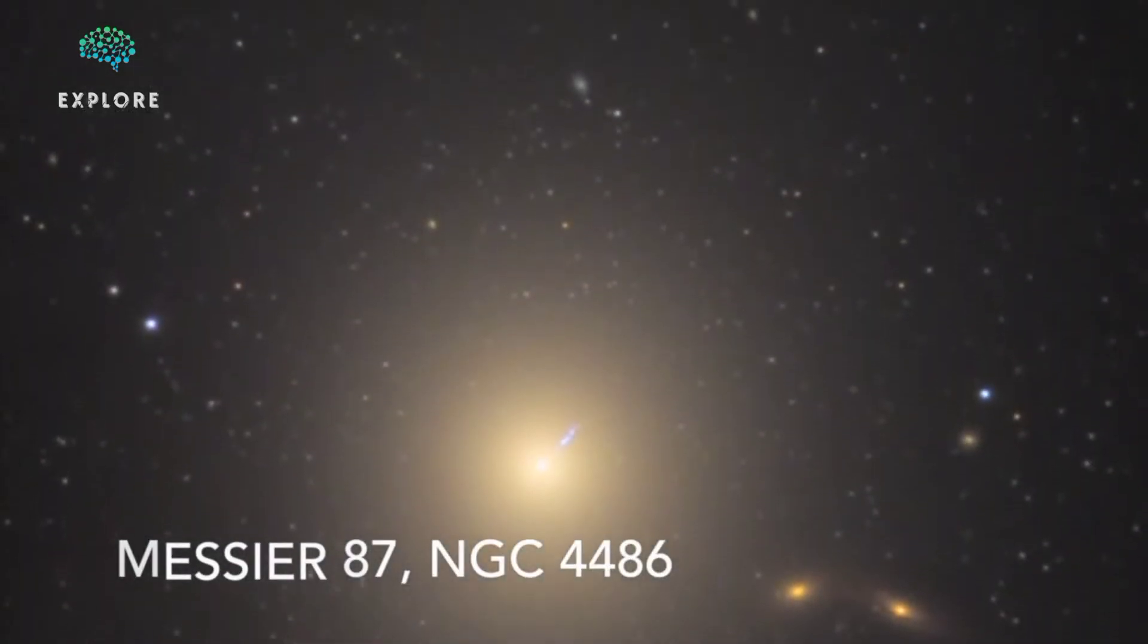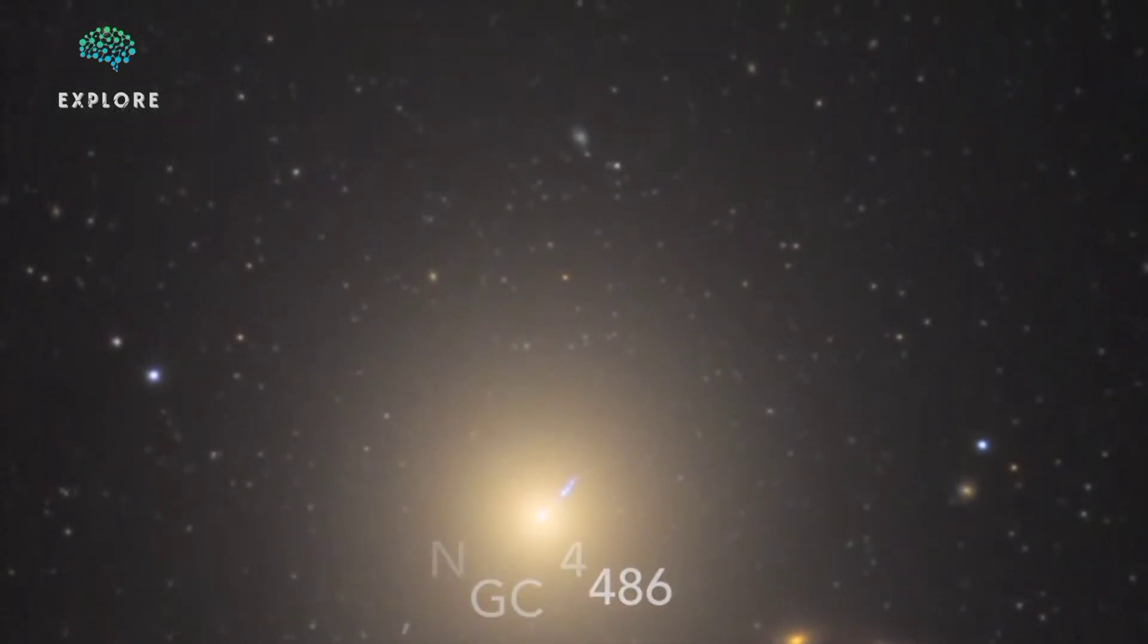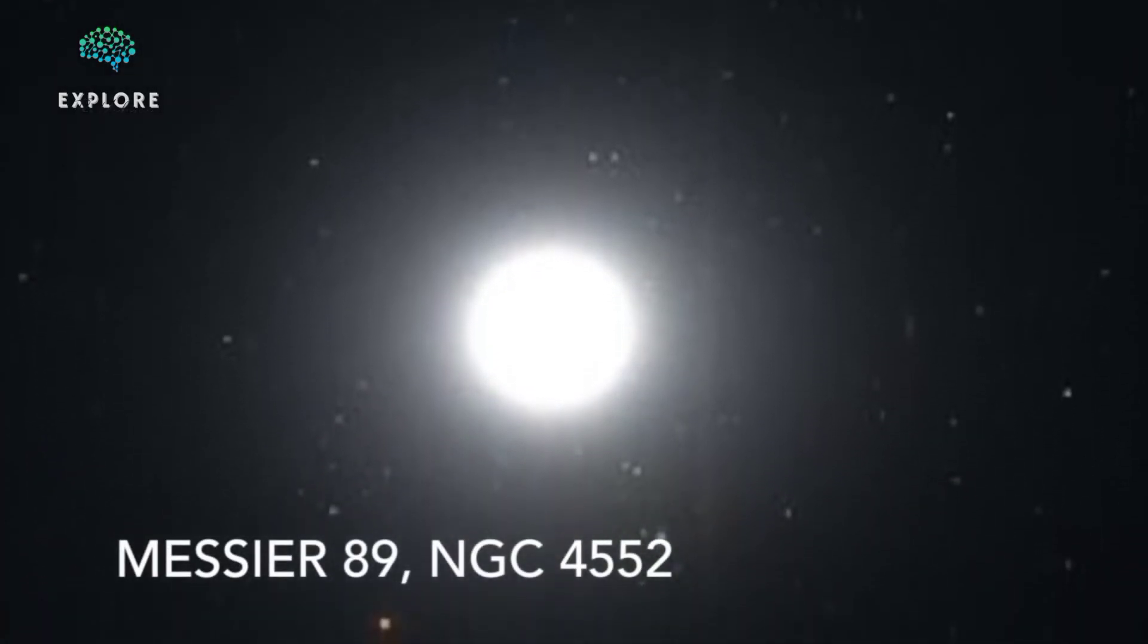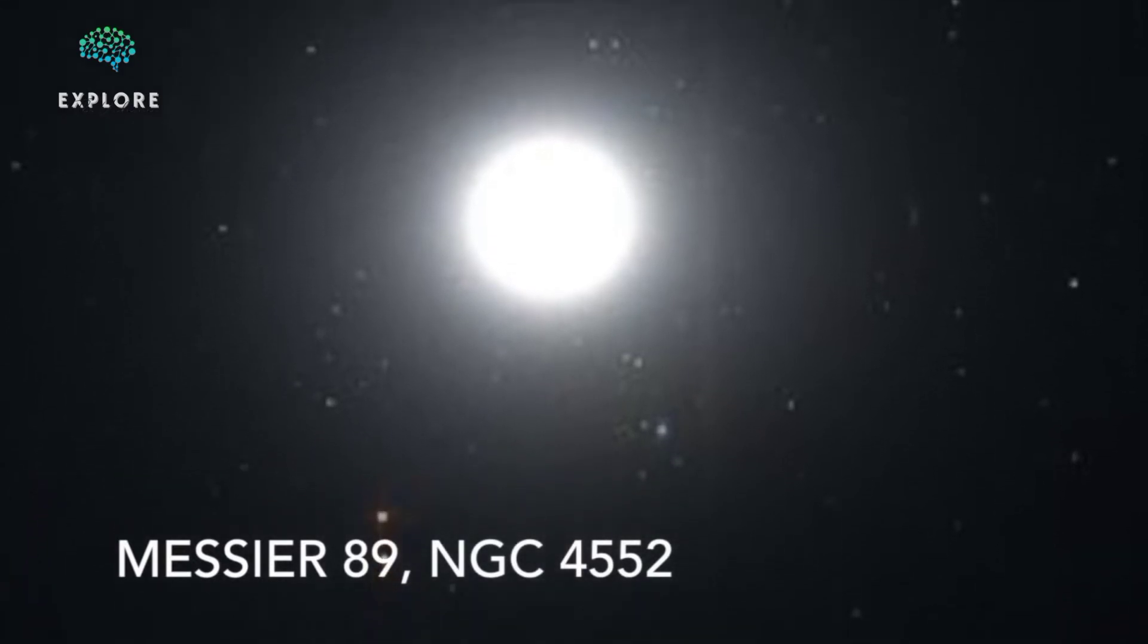Elliptical galaxies are shaped like stretched-out circles, or ellipses. Some elliptical galaxies are more stretched out than others. One might look almost perfectly circular. Another one might look long and flat.